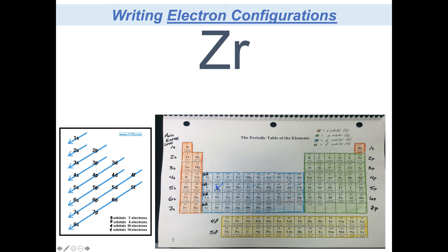There are a few ways to do this. You could move across the periodic table and read it like a book: start with 1s, go across, come down to 2s, then 2p, then 3s, 3p, then 4s, 3d, then back to 4p, and fill in until you hit zirconium. The other way is to know you have 40 electrons — because the atomic number equals protons, and for a neutral atom that is not an ion, 40 protons are neutralized by 40 electrons. So you have 40 electrons to fill, and you can use this guide as you go.